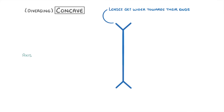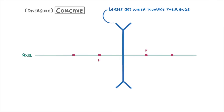Next, we need to add our axis, which is a horizontal line through the middle of the lens, and our focal points, of which there will be one on either side. You might sometimes hear the focal point being called the principal focus instead, but they both mean exactly the same thing. We also normally add another dot on either side that are twice as far away from the lens as the focal point is, and we label this one 2f. These will become important later on when we do convex lenses.